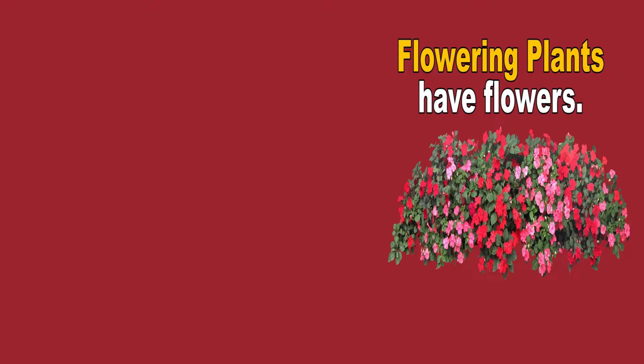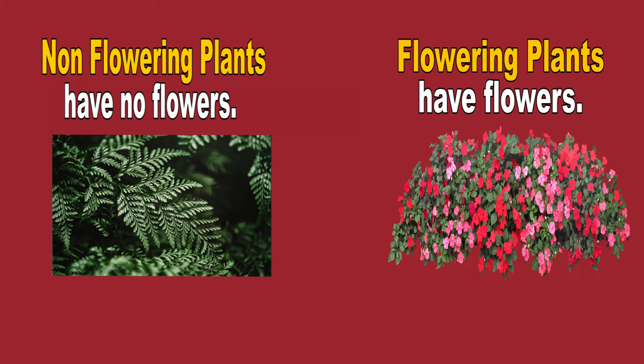So if flowering means the plant has flowers, then non-flowering — you know that — non-flowering means no flowers on them. All plants, as I said earlier, any part of the world you go, we can put them into these two groups: flowering, which are plants with flowers, and non-flowering, which are plants without flowers.